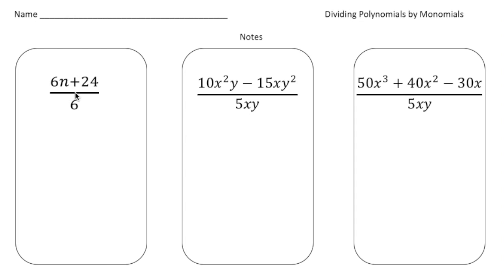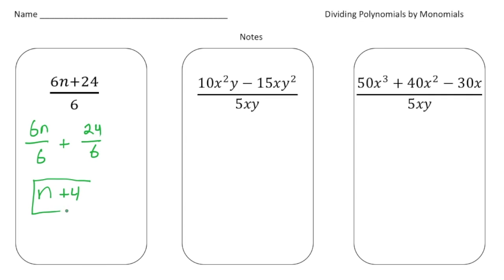The first problem we have is 6n plus 24 divided by 6 — a binomial divided by a monomial. What you do is take each term of the numerator and divide it by the denominator. So it's 6n divided by 6, plus 24 divided by 6. 6n divided by 6 gives us n, and 24 divided by 6 is 4, so our answer is n plus 4.